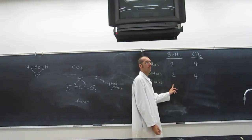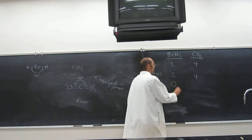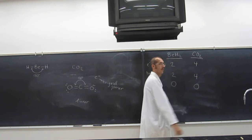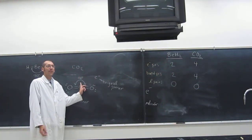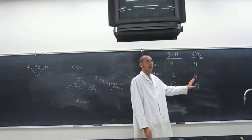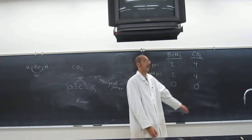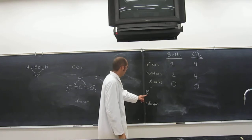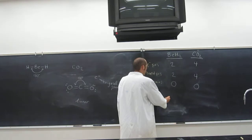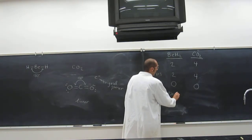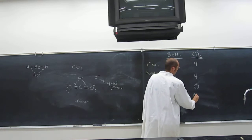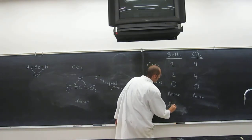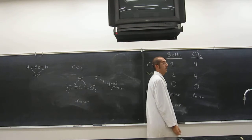How many lone pairs are there in beryllium hydride? Zero. What about around the carbon in carbon dioxide? Zero. We're looking around the carbon. The electronic structure for beryllium hydride is linear, and around the carbon in carbon dioxide it's also linear. The molecular geometry for both beryllium hydride and carbon dioxide around the carbon is linear.